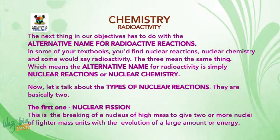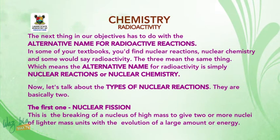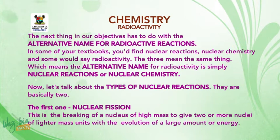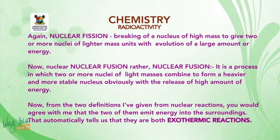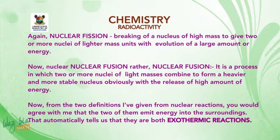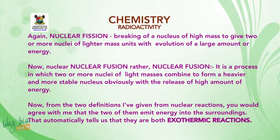Let's talk about the types of nuclear reactions. There are basically two. The first one is nuclear fission — this is the breaking of a nucleus of high mass to give two or more nuclei of lighter mass units with the evolution of a large amount of energy. The second one is nuclear fusion — a process in which two or more nuclei of light masses combine to form a heavier and more stable nucleus.